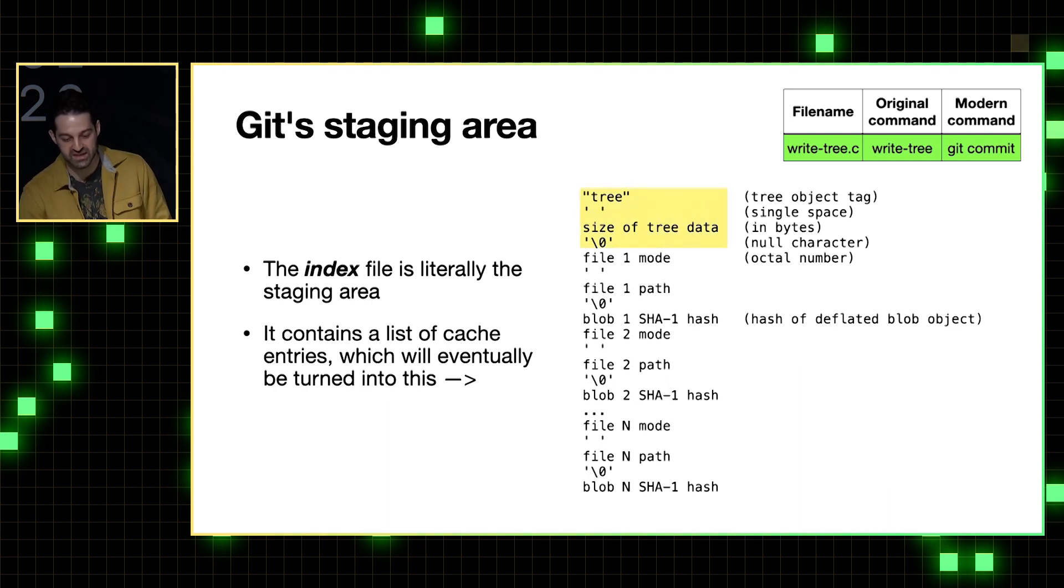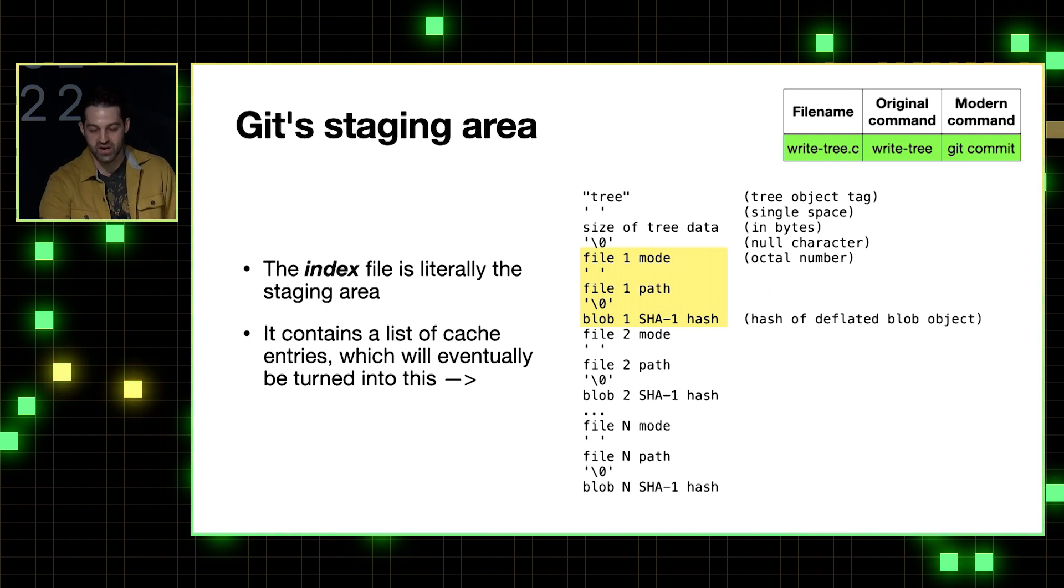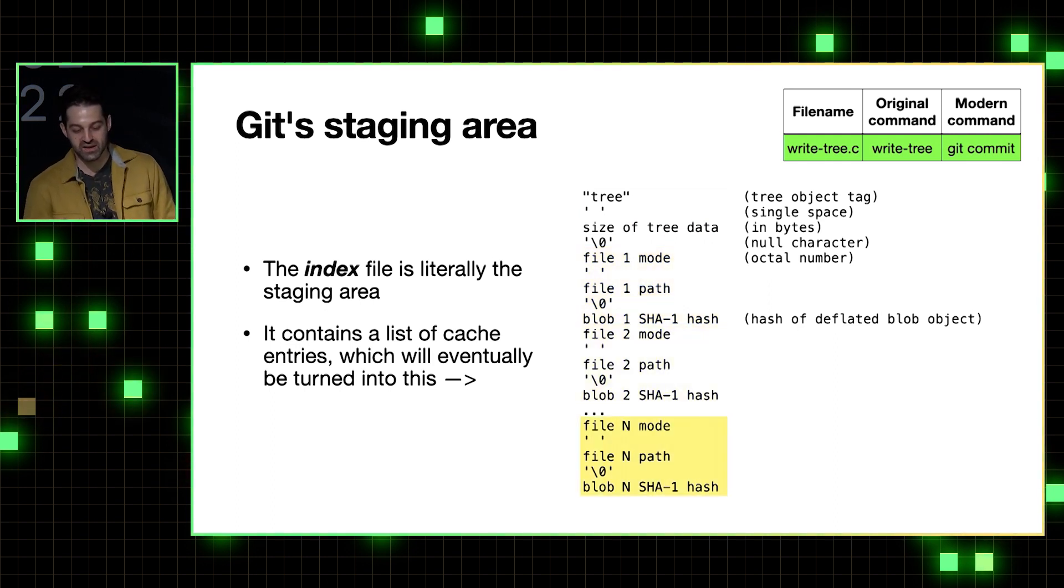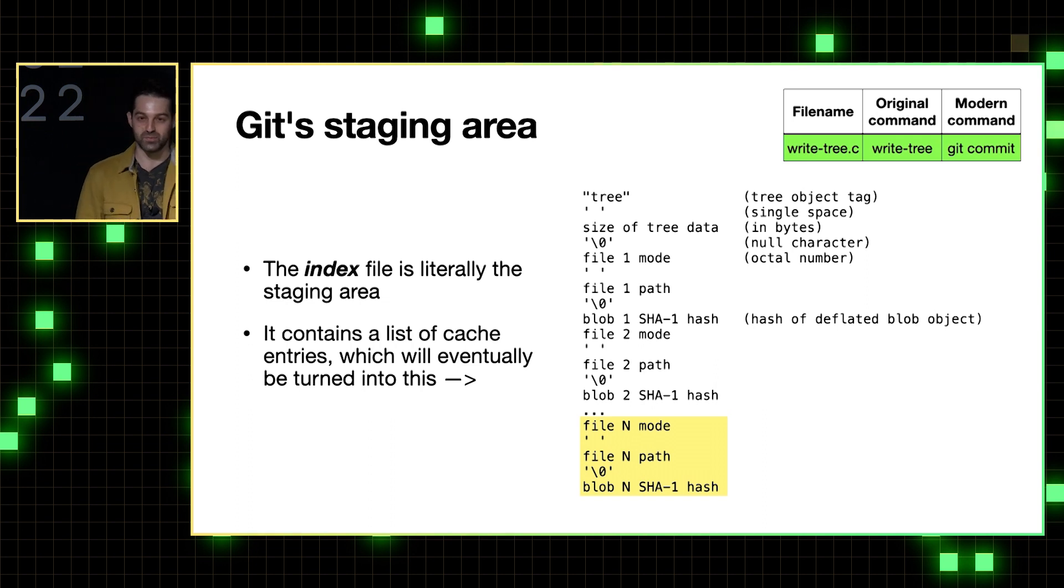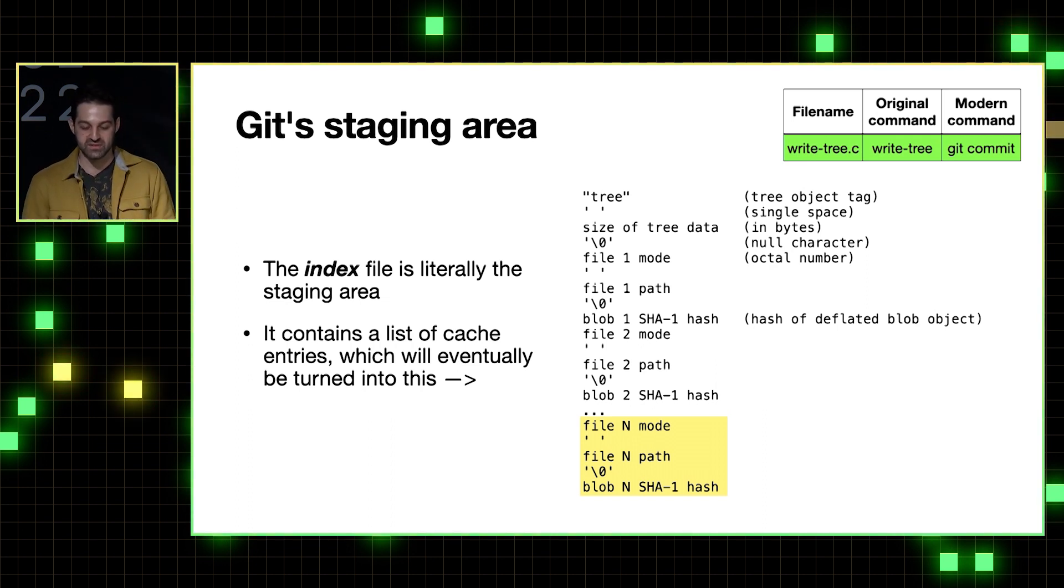So the tree starts with the object's type and the size of the data, followed by a series of these chunks. And each chunk has three pieces of information that should look super familiar from the previous slide as a part of the three pieces of information from a cache entry: a file's mode or permissions, a file's path and name, and SHA1 of the file's blob. So from this, you can kind of think of a tree as being built up of a series of these cache entries.